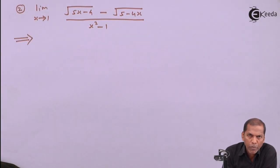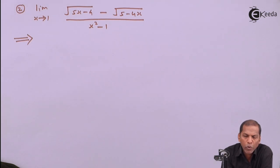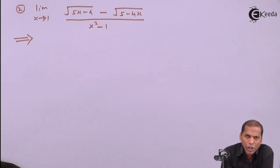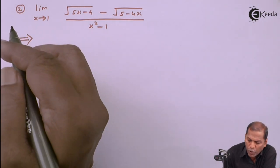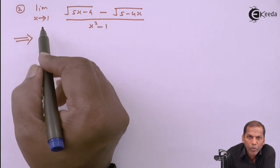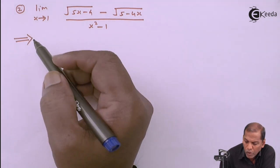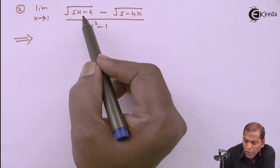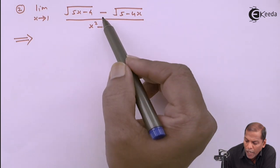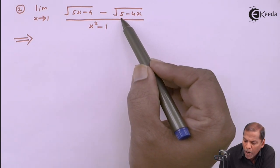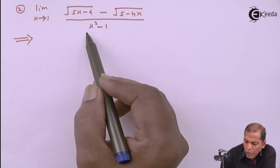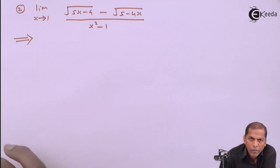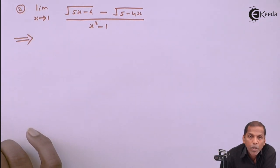Hello friends. Now we see problem number 2, which is also based on the rationalization method of the chapter on limits. The problem is: limit x tends to 1 of square root of (5x minus 4) minus square root of (5 minus 4x), whole divided by x squared minus 1. Now let's see the solution.